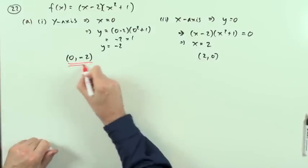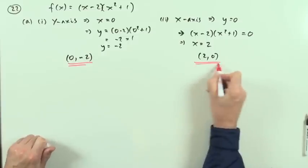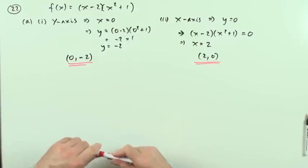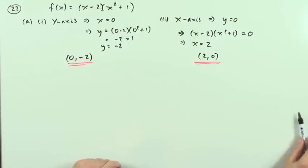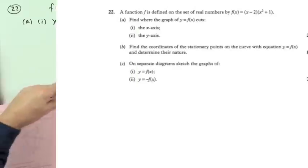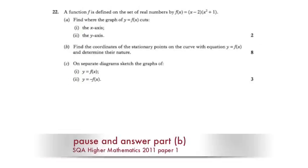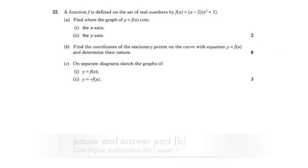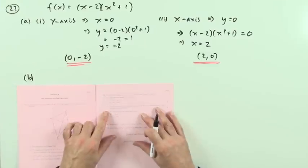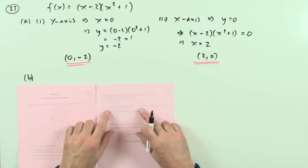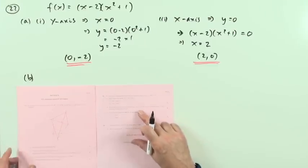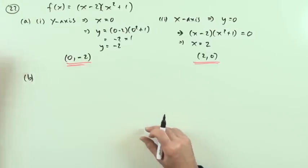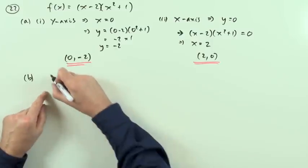So it cuts the x-axis at (2, 0). That's the first part — the intersections with the axes. Part b: find the coordinates of stationary points and determine their natures.